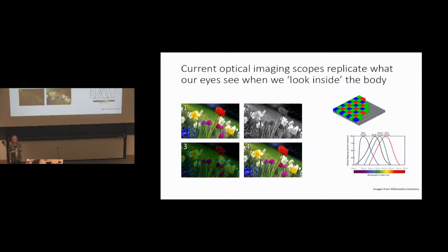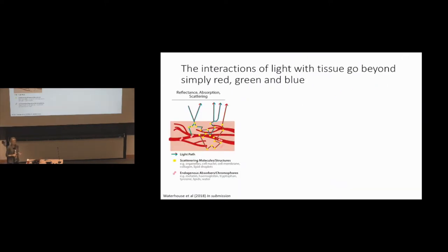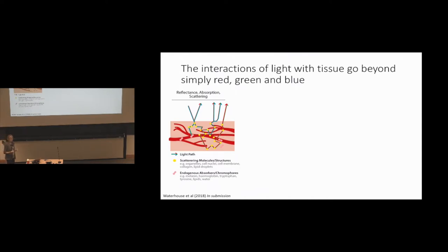That's great if we just want to use what our eyes can see, but optical interactions with tissue go way beyond that. The simple reflectance we capture with white light is only one of the many interactions of light with tissue. We can have absorption of light by endogenous molecules like melanin in the skin, hemoglobin in the blood, and other molecules like lipids and water. On top of absorption, we also have scattering processes, often occurring because of small organelles within cells, large nuclei, and macromolecules in the tissue structures.